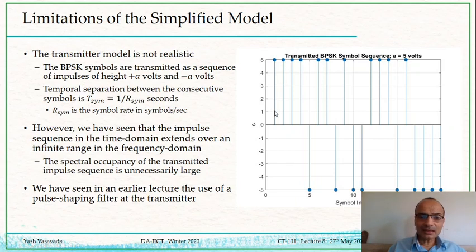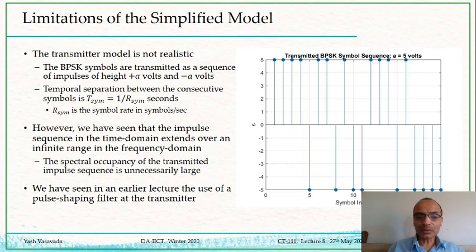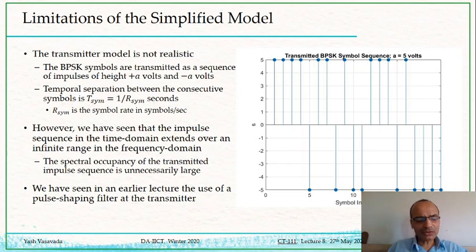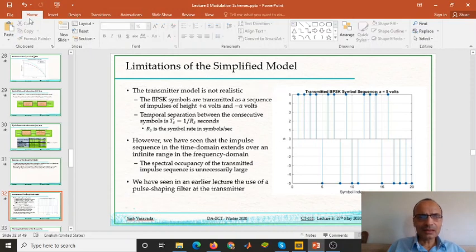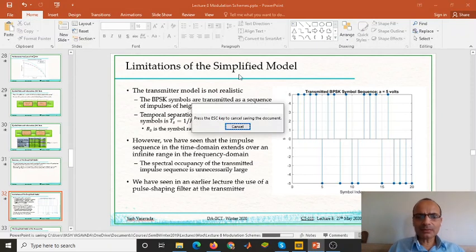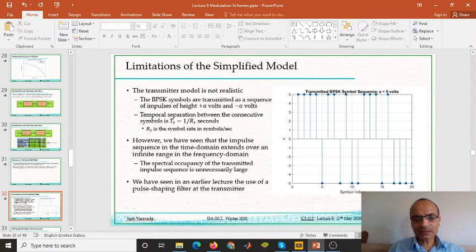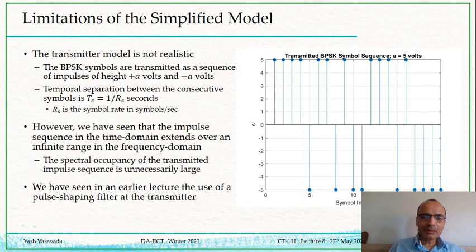Although the x-axis is the index of the symbol, we could draw it with the x-axis as time in seconds — then the interval between two impulses would be 1/RS, denoting the number of seconds per symbol. The inverse of that time TS (symbol period) is RS (symbol rate). But this is not reality — we cannot transmit impulses like this.